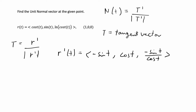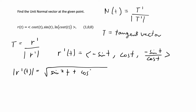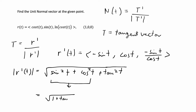Then we have to find the magnitude of r'. The magnitude of r'(t) is equal to the square root of the sum of the squares of each of the three components, which is √(sin²t + cos²t + tan²t). Since sin²t + cos²t = 1, this simplifies to √(1 + tan²t) = √(sec²t) = sec(t), which is also the same as 1/cos(t).